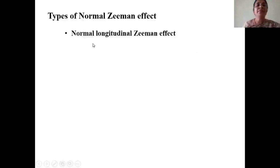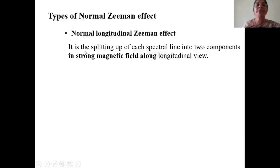The first type is the normal longitudinal Zeeman effect, which is the splitting of each spectral line into two components in a strong magnetic field when viewed along the longitudinal direction.